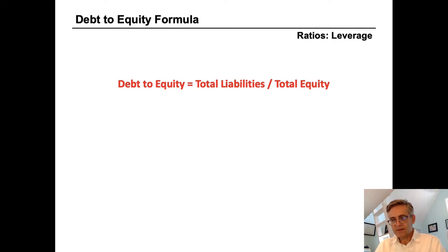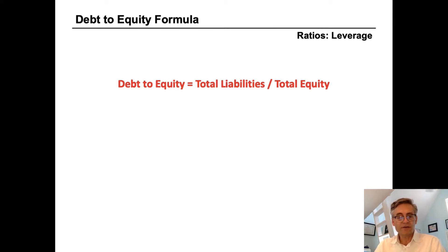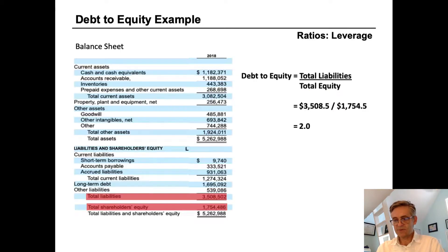The ratio of debt-to-equity shows how much debt a company has for every dollar of equity. So let's look at an example now using Hasbro.